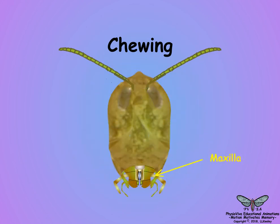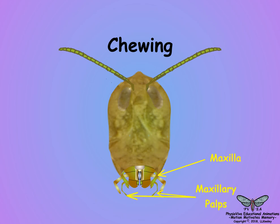Paired maxillae are located below the mandibles and have finger-like palps. The maxillae and their palps help the mandibles hold and manipulate the food.